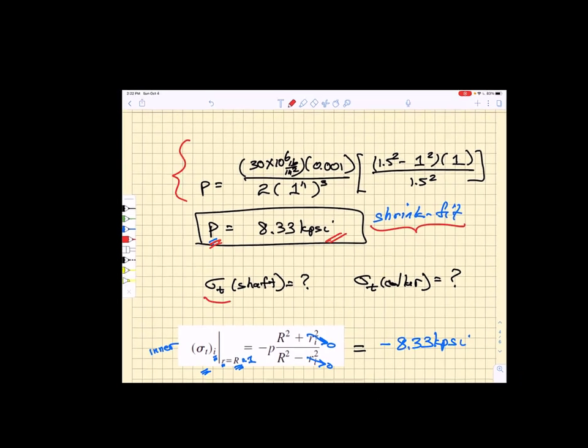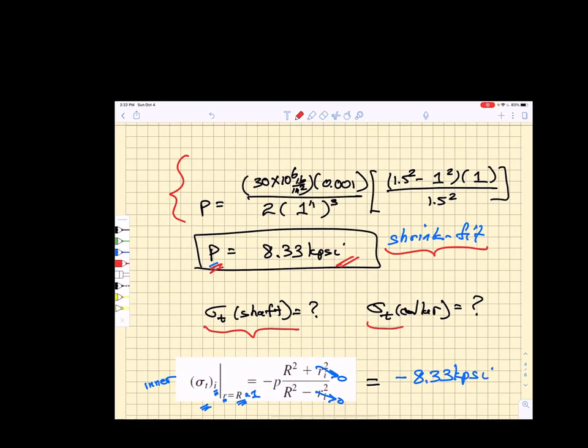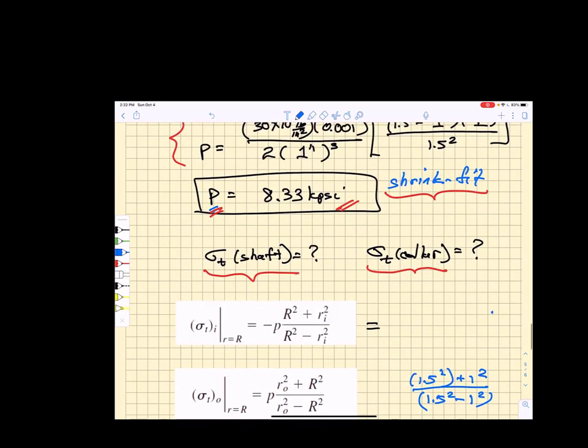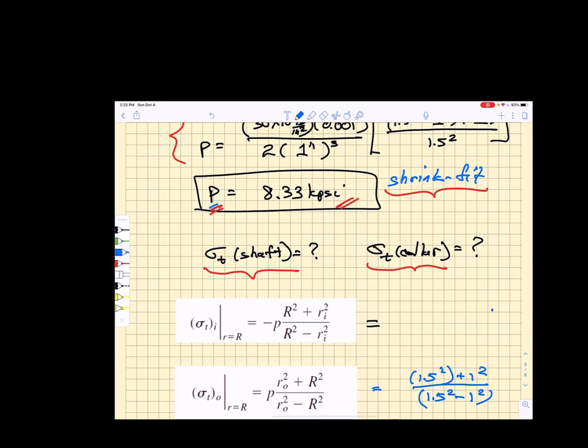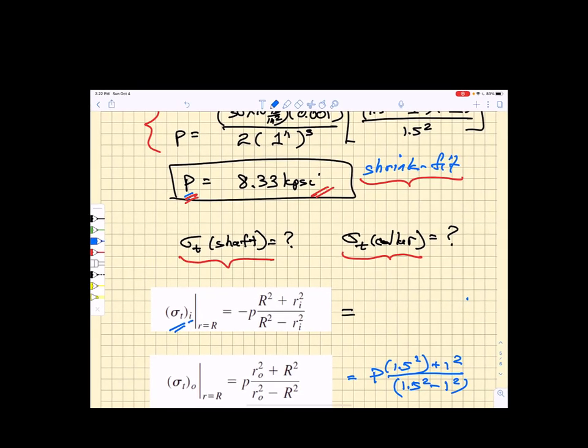Now I want to ask what the heck is the tangential stress or hoop stress in the shaft and what is the tangential or hoop stress in the collar. So in order to do that I have to go back to some equations in the book. If I go back to my equations in the book I find that the hoop stress for the inner cylinder and in this case that's the shaft at the interface R equal to capital R, that is the nominal interface between the shaft and the collar, is given by this equation here. Well in that equation the inner radius of the inner shaft is zero and so it doesn't matter what this R is, those terms cancel and we're left with the hoop stress in the shaft being equal to minus p which means we have a compressive 8.33 kpsi hoop stress in the shaft.